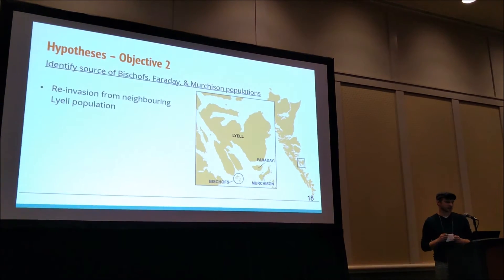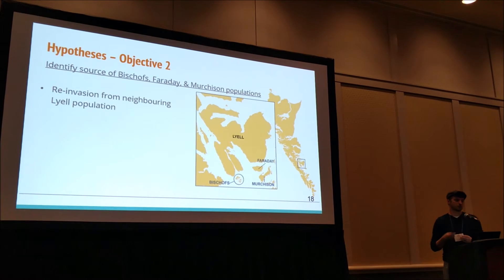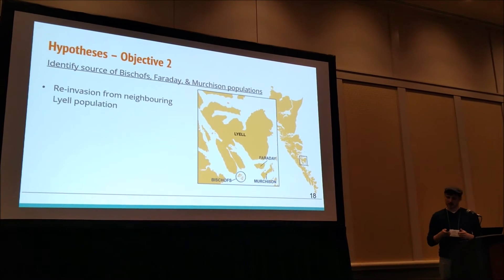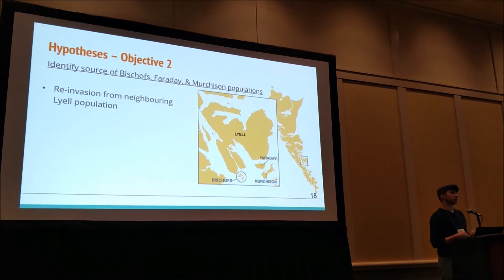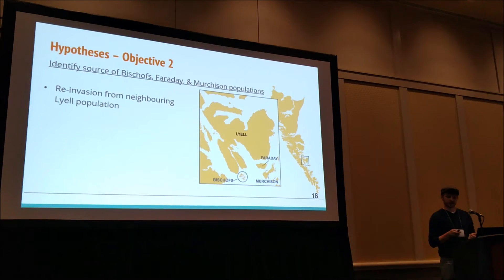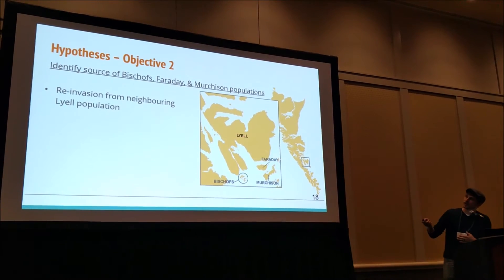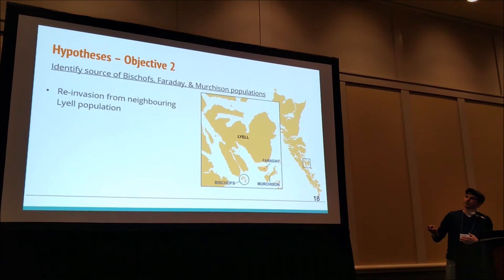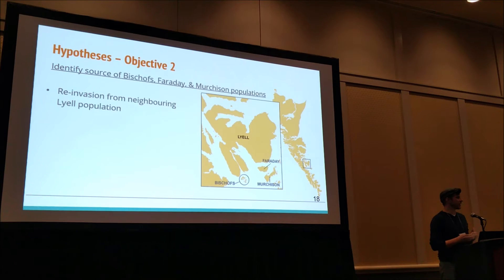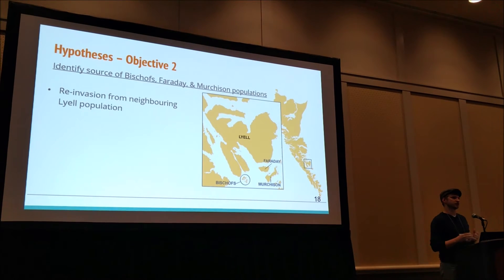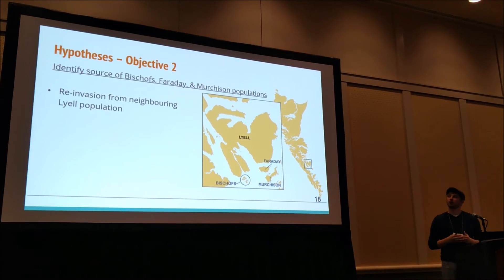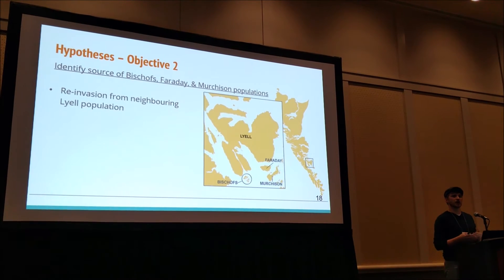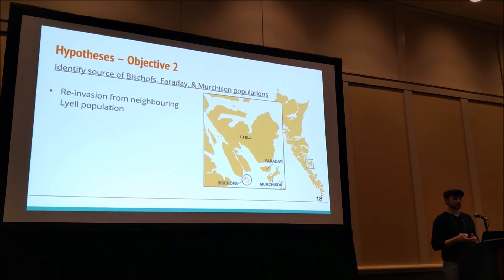For the second objective, we looked at the Bischoff's, Faraday, and Murchison populations to determine their source. Our prediction was that this was going to be a reinvasion from the neighboring Lyle Island. If you look at Lyle here, you can see Bischoff's and Faraday. The distance between these is relatively short for rats — it's a five to seven hundred meter swim, which is actually well within the swimming distance for brown rats, as they've been shown to swim up to two miles in open ocean.